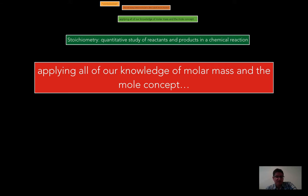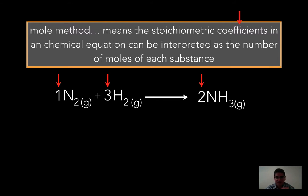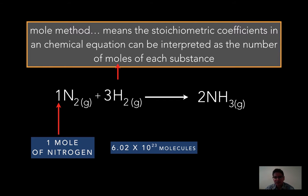Applying all of our knowledge of molar mass and the mole concept — everything that we've looked at up to this point — we're going to need to take those tools out of our tool belt to help us solve these problems. There's a particular method that we're going to discuss called the mole method. What this means is that the stoichiometric coefficients — the numbers in front of your elements or compounds — can be interpreted as the number of moles of each substance.